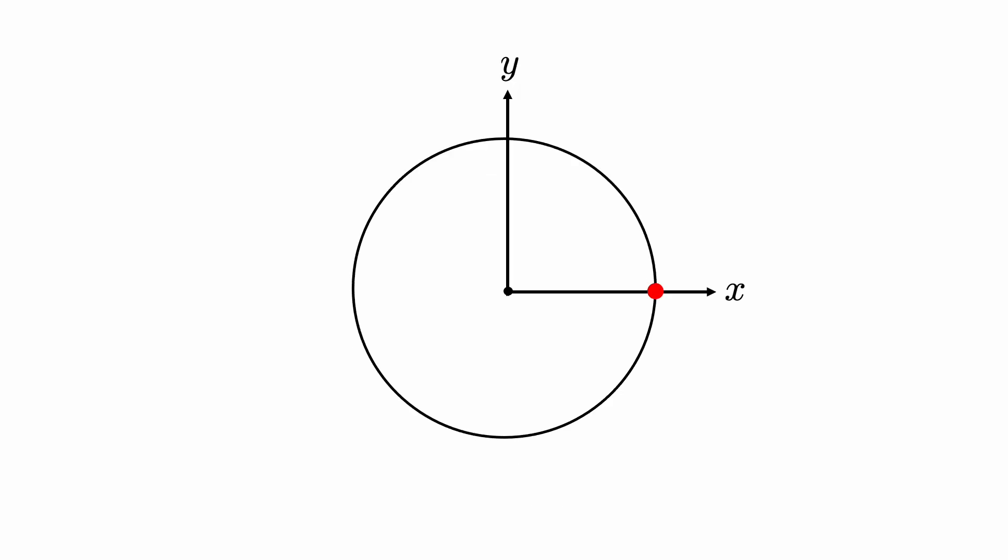To truly break symmetry, imagine we have a fixed red point such that when we rotate the circle, the blue point rotates but the red point remains fixed. With this fixed red point, we create a reference frame that allows us to observe an angle from that fixed red point, thus allowing the different points on the circle to be distinguished from each other. By creating a reference frame, we create something that allows us to compare and contrast, thus creating distinguishability and breaking symmetry. The additional information associated with that broken symmetry is the angle theta from the fixed red point.